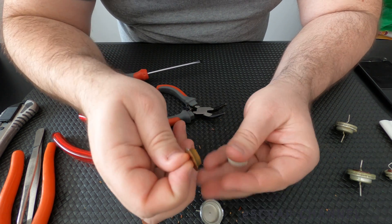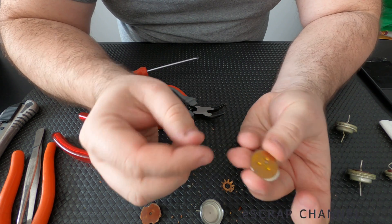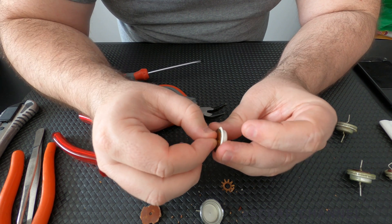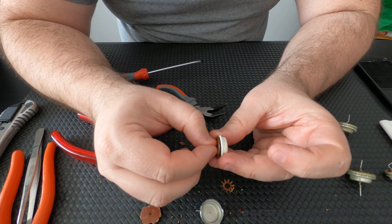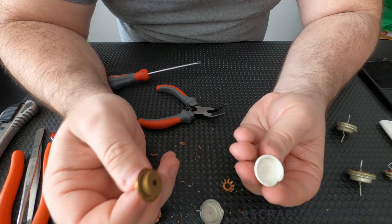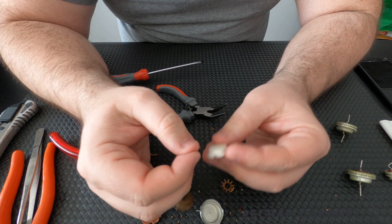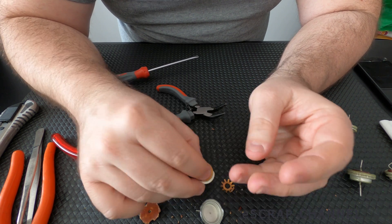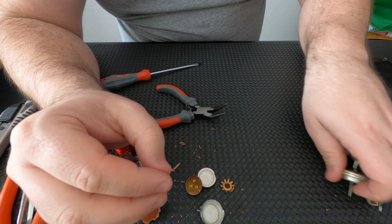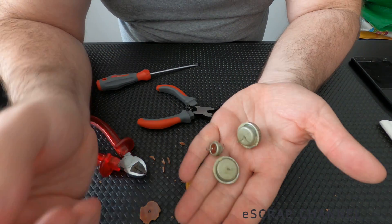And usually the capacitor stays like this. So tantalum is inside of this silver cup. And we have electrolyte inside. That's how the capacitor works. That's how it looks like. One is ready. Three still to go.